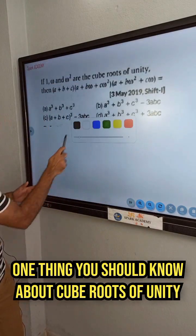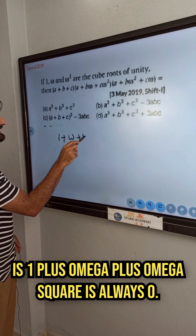So in this we are asked about cube roots of unity. One thing you should know about cube roots of unity is 1 plus omega plus omega square is always zero.